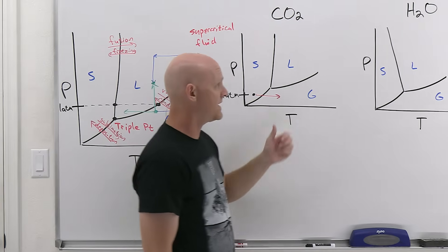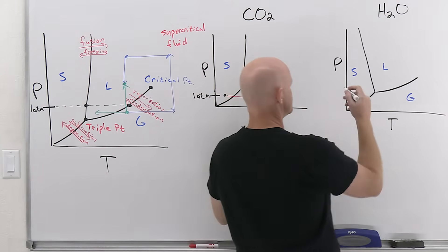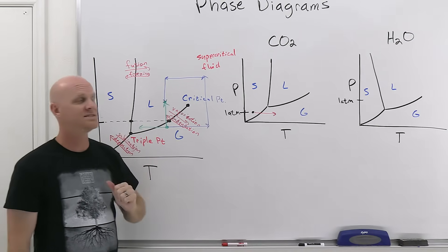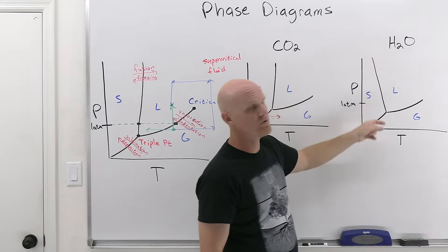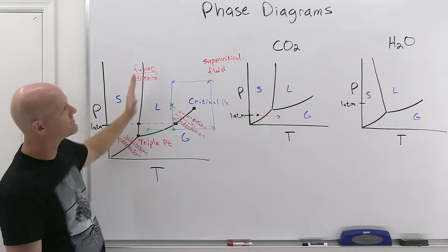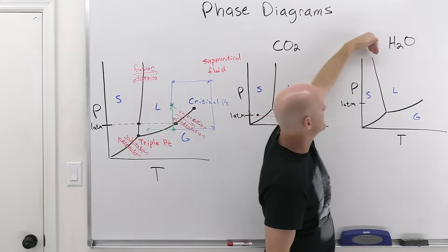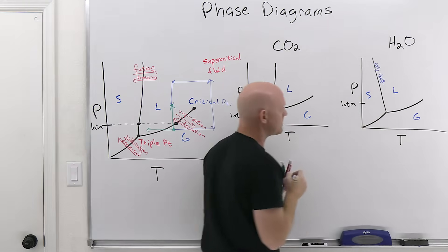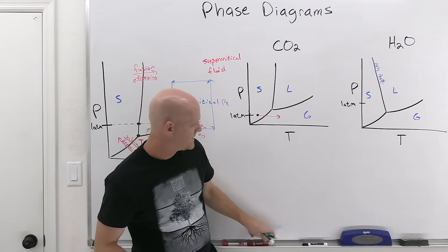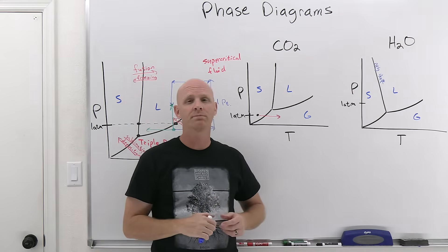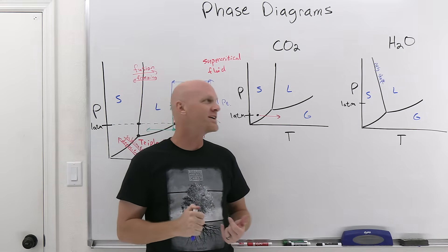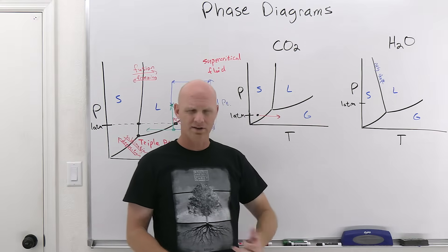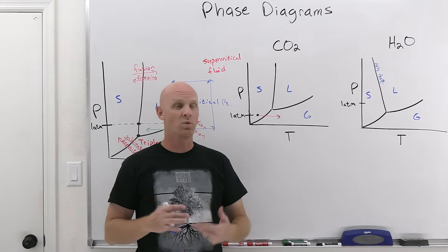Water has its own uniqueness as well. For water, one atmosphere is still above the triple point just like a typical substance. What's different is the solid-liquid line of equilibrium. In a typical compound, that line has an uphill positive slope; CO2 also has a positive slope. But for water, it actually has a downhill negative slope, which is rather unusual and actually very important.